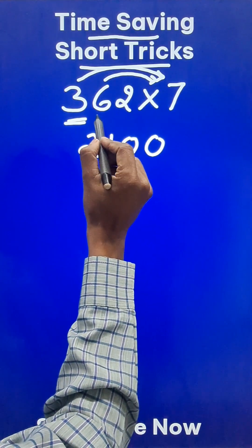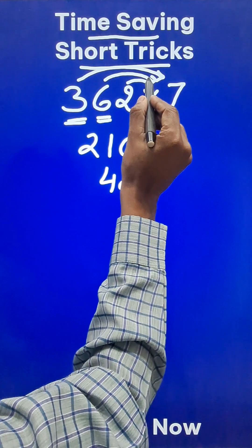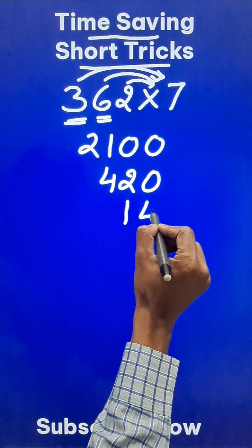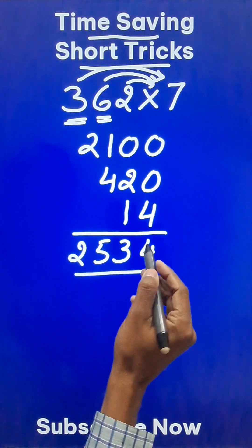6 sevens are 42. Because this is in the tens place, 42 followed by 1 zero. And likewise ones place, 2 into 7 is 14, so 14 will be written as it is. Just add vertically: 4, 3, 5, and 2, and there you have the answer.